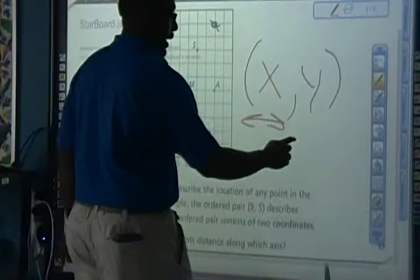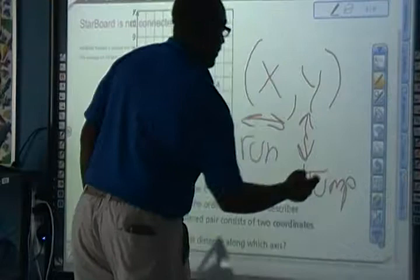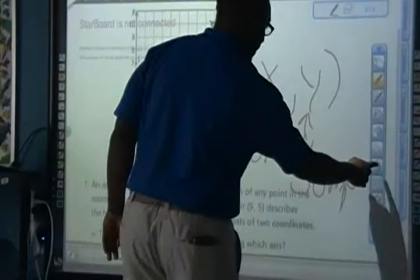Your x-axis is horizontal, your y-axis is vertical. The way I like to remember it is you want to run first and then you jump. Okay, so run and then jump. So you want to go from left to right first and then jump up.